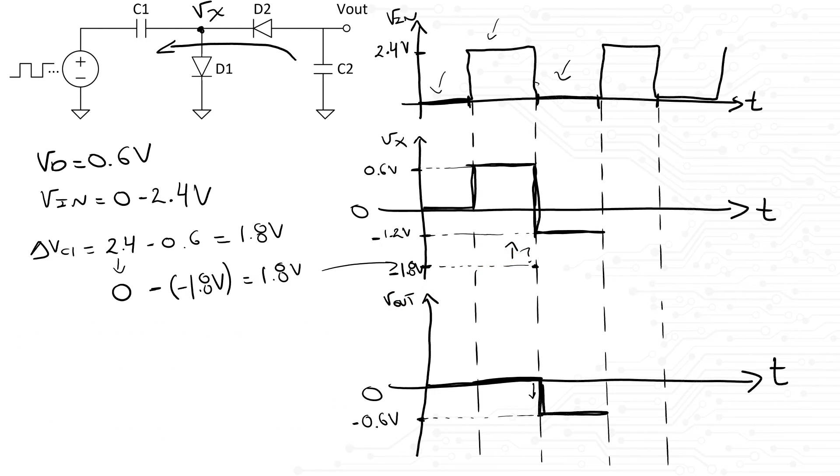And then the cycle of course repeats itself, although with different initial conditions. The input voltage is again 2.4 volts. That means Vx climbs up to 0.6 volts and Vout stays at negative 0.6 volts. This time when the input voltage drops to 0, Vx will maintain its original delta V of 1.8 volts.